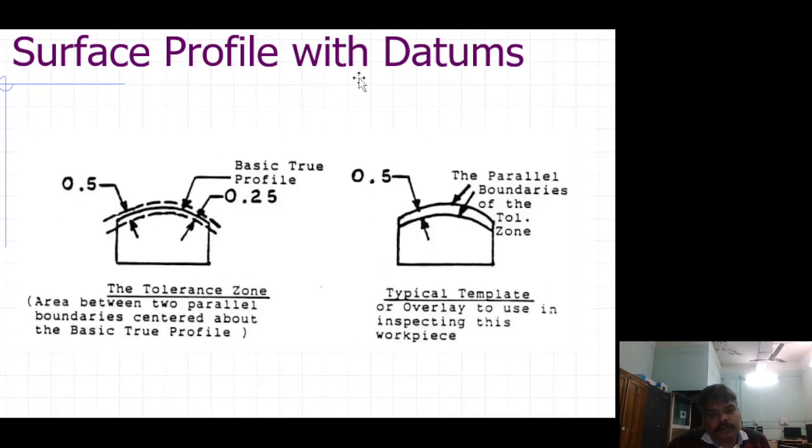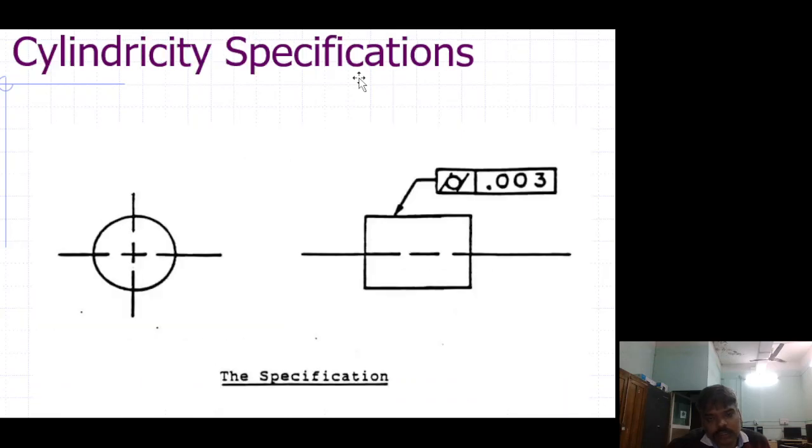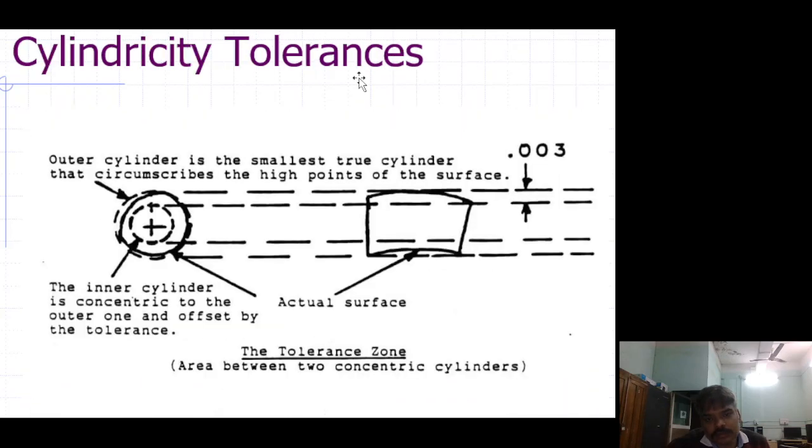Surface profile with datum. Cylindricity specification, cylindricity tolerance. Outer cylinder is the smallest true cylinder that circumscribes the high points of the surface. The inner cylinder is concentric to the outer one and offset by the tolerance.